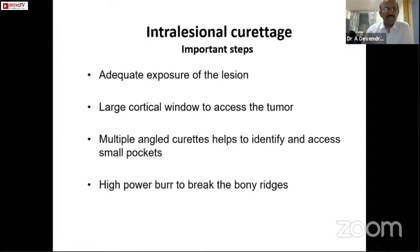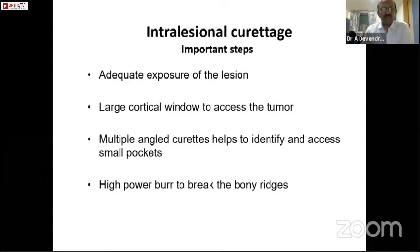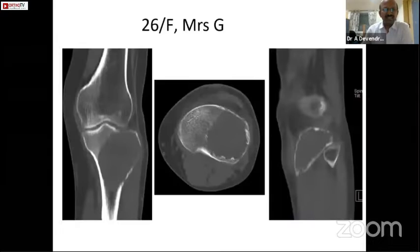Coming to the important steps for intralesional curettage: first we need adequate exposure of the lesion, followed by a large cortical window to access the tumor from all corners. Multiple angled curettes are required to identify small pockets in the corners and access them, and high-power burring is very important to break the bony ridges.